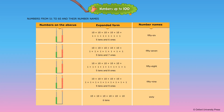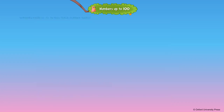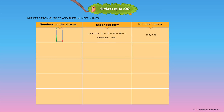6 tens — the number name is written as 60. Numbers from 61 to 70 and their number names. 6 tens and 1 one — the number name is written as 61. 6 tens and 2 ones — the number name is written as 62.